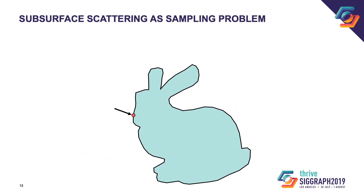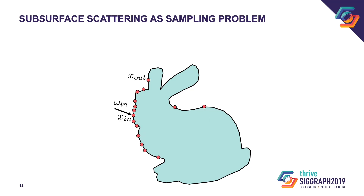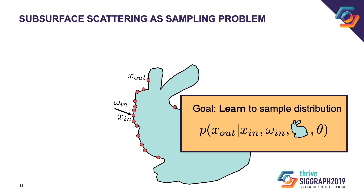Now let's define the problem of importance sampling the BSSRDF more precisely. For a given incident location on the surface, light can take many different paths to exit the object again. These paths effectively form a distribution of outgoing positions on the surface. Our goal is to use machine learning to learn how to directly sample the distribution of outgoing locations, rather than having to simulate all internal scattering events. The distribution of outgoing locations depends on the incoming position, direction, scene geometry, and the parameters of the scattering medium, summarized as theta — including albedo and anisotropy. If we can directly sample the outgoing position, we do not have to run the expensive brute force path tracing, though we can still use it to obtain training data.